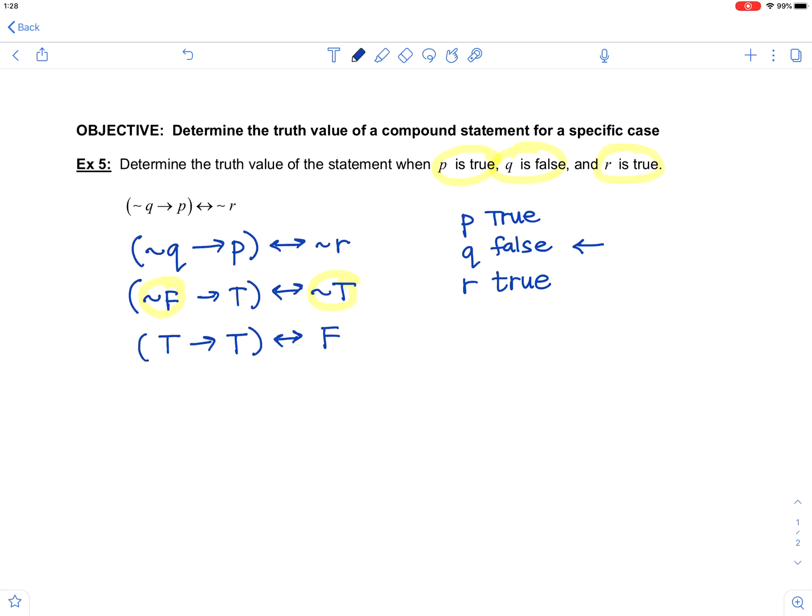The conditional there, true implies true is true, if and only if false. That's a biconditional where the truth values do not match, so that statement in that specific case, this statement comes out false.